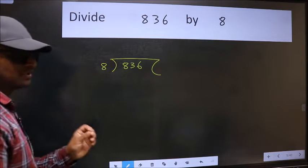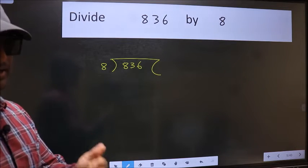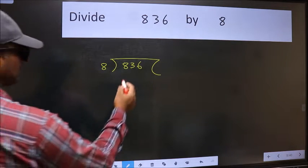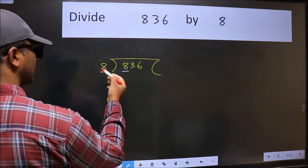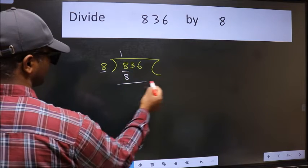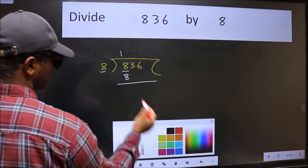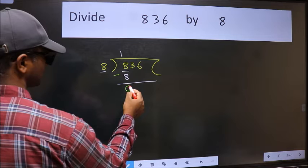This is your step 1. Next, here we have 8 and here 8. When do we get 8 in 8 table? 8 ones 8. Now we should subtract. We get 0.